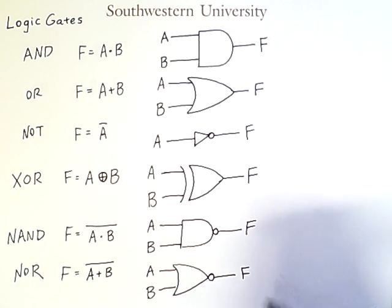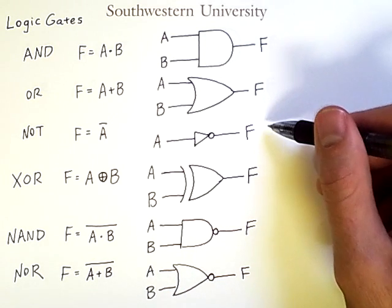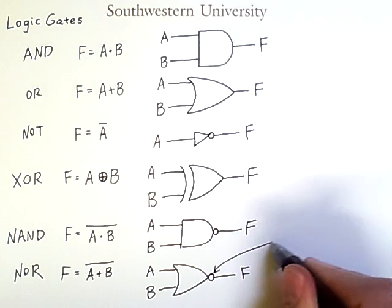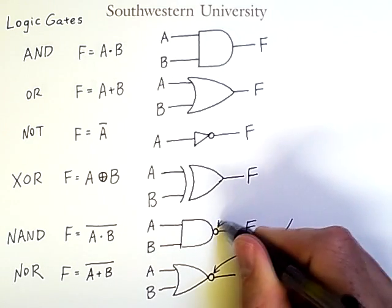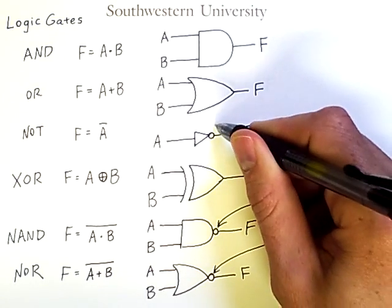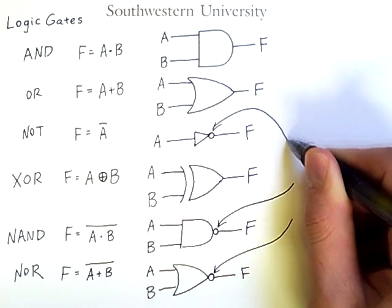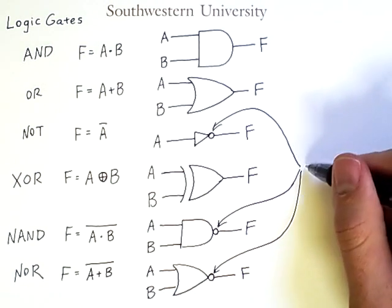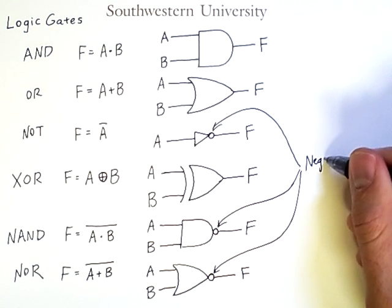So you can see that in NOT, NAND, and NOR, we have this little circle. So in all of these gates, that circle represents negation.